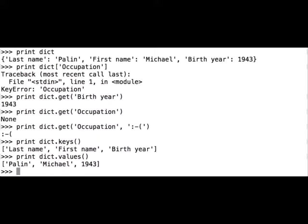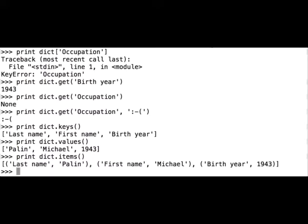The items method will extract all the key-value pairs and put them in a list. So print, dict, items, and we see a list of key-value pairs from our dictionary.